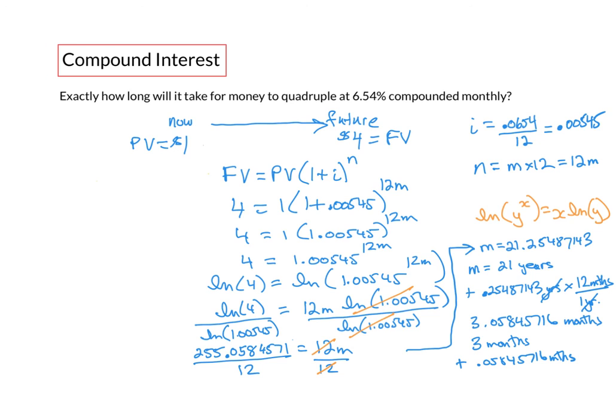Again we can split that into 3 months plus 0.05 and change months. And we know there's approximately 30 days in one month. Again the months cancel and when we multiply that out we end up with 1.75 etc days.